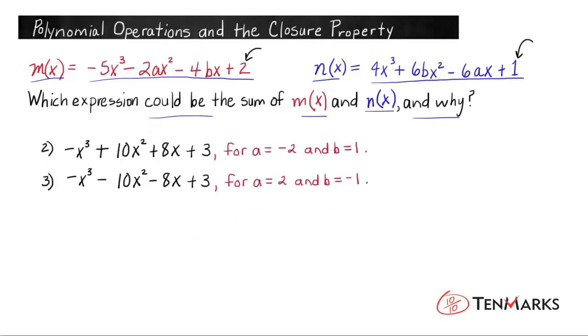Now we've established that the first terms and the constant terms, or the last terms, are correct for both of these options. So let's focus on the second term, or the quadratic term, the term with the x². I'm going to look at option 2 first. For m(x), the term with the x² is -2ax². I'm going to write that down, -2ax².